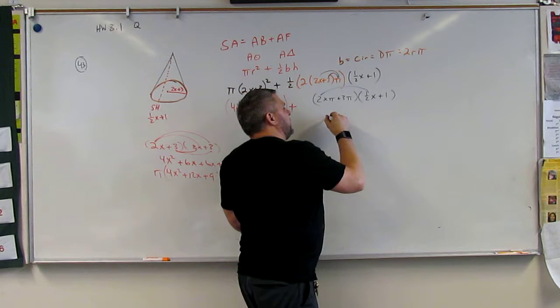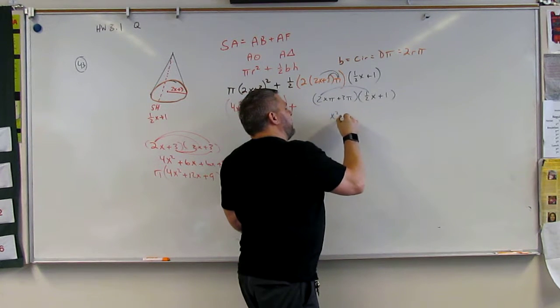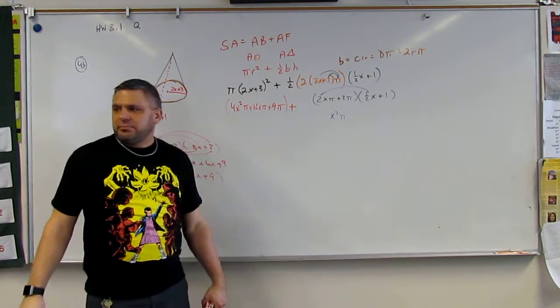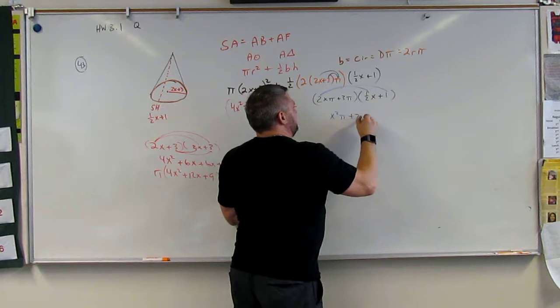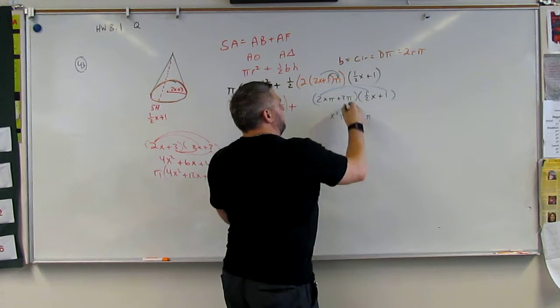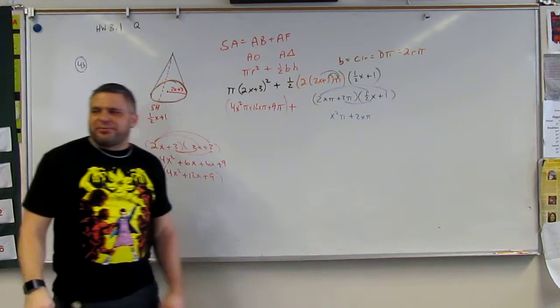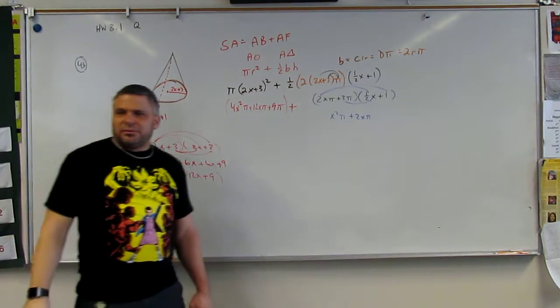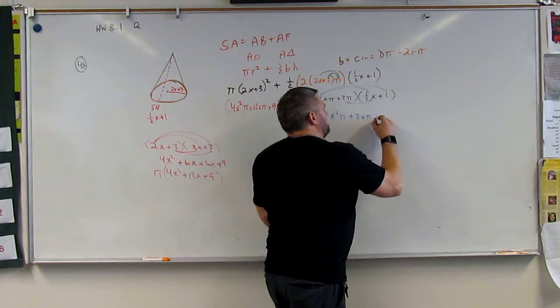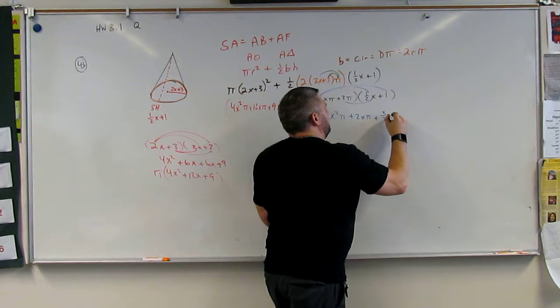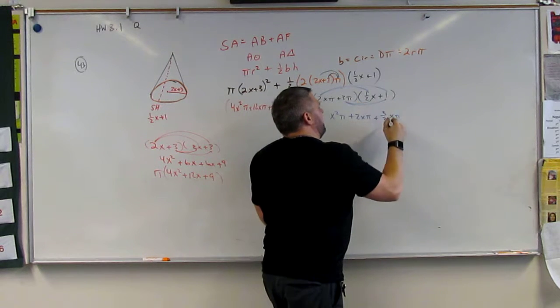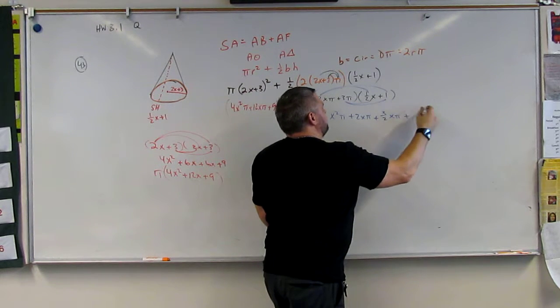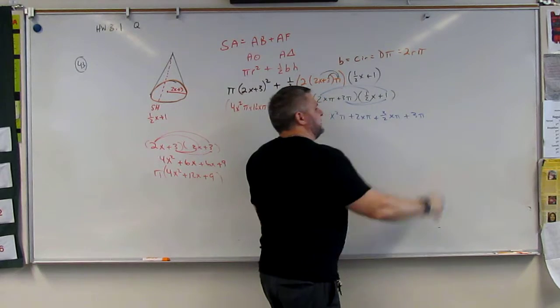Well, what's half of 2? And x times x, so that would be 1x squared pi. And then this would just be plus 2x pi. Then what's 1 half of 3? That would be plus 3 halves of pi, of x pi. And then 3 times 3 pi, that would be plus 3 pi.